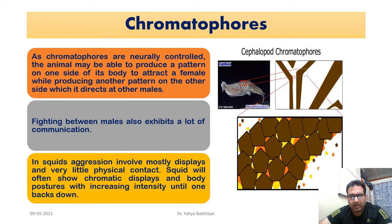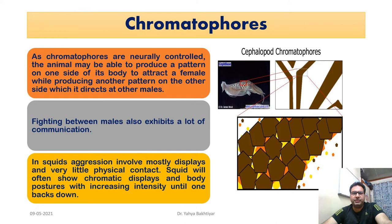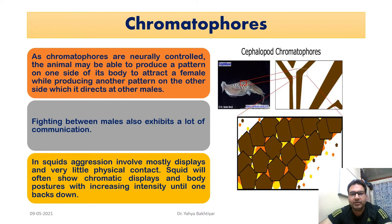Now for the second question — how do cephalopods change color? The answer involves chromatophores, but not only chromatophores. We also have leucophores, iridophores, and photophores, which we shall discuss. Chromatophores are the first to discuss, and an important point is that they are neurally controlled.